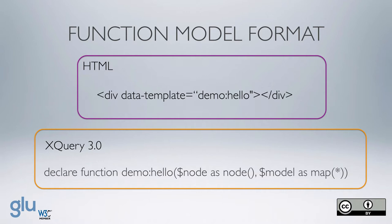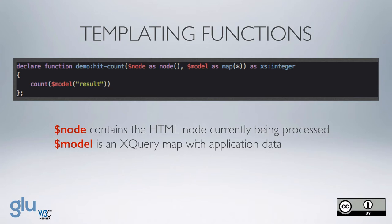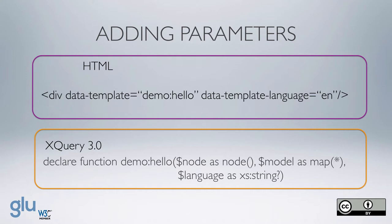All templating module functions have a specific function signature: a node containing the HTML node currently being processed, and the model, which is an XQuery map with application data. There's an additional signature allowing parameters — here the function demo:hello has a node, the map, and then an additional possible parameter of language. That parameter is added to the div by data-template-language, and in this case it's set to 'en'.